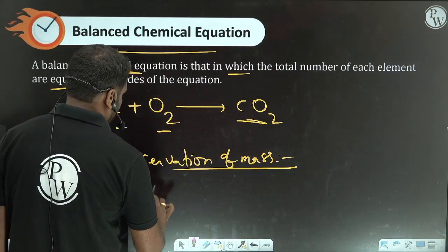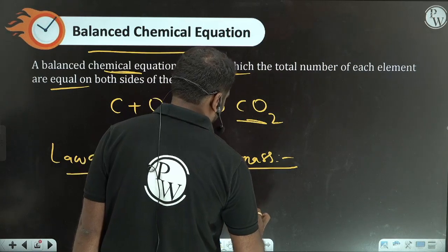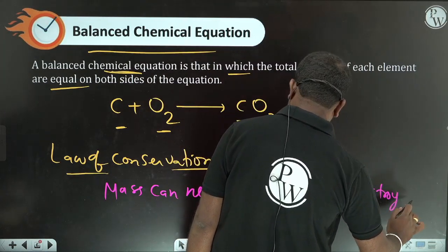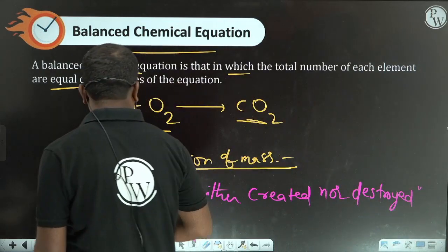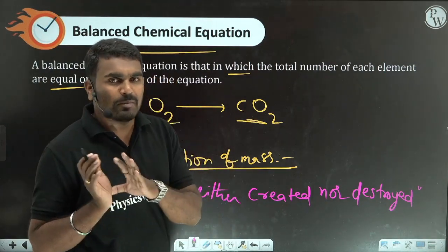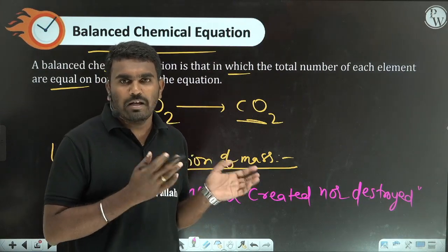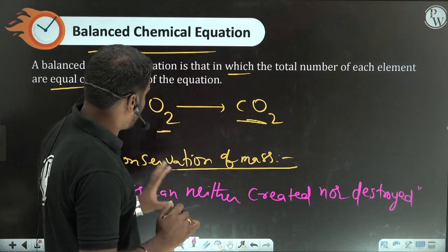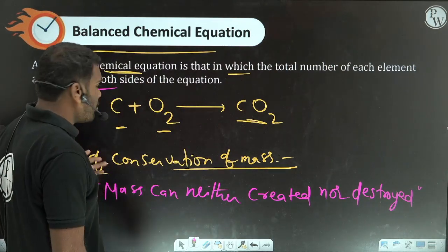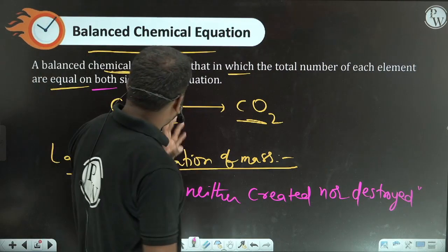The law of conservation of mass states: mass can neither be created nor destroyed. One form of mass is converted into another form - reactants are converted into products. The mass is conserved. Atoms cannot be created or destroyed; they can only be rearranged. So a balanced chemical equation is that in which the total number of each element is equal on both sides of the reaction. We balance chemical equations by using the law of conservation of mass.